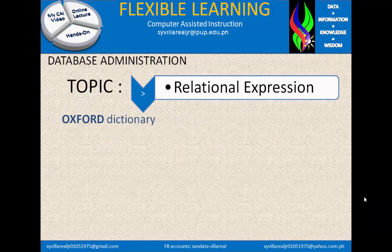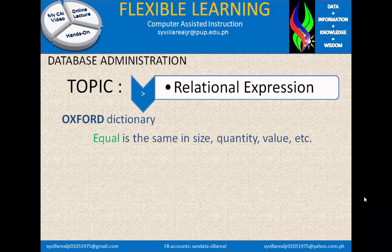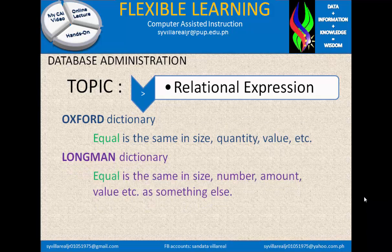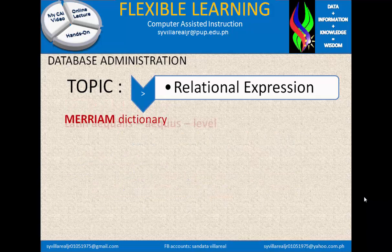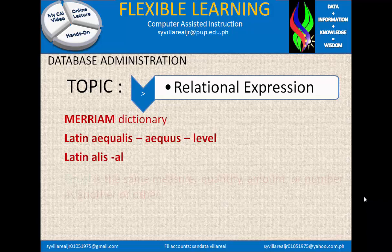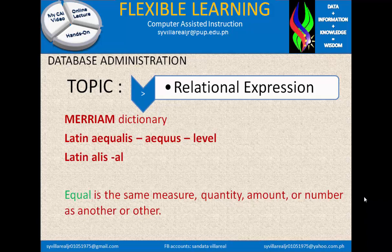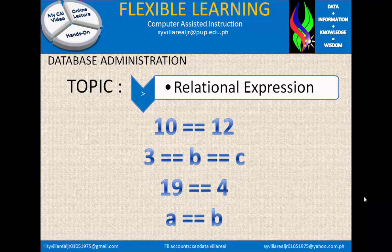What is equal? In the Oxford Dictionary, equal is the same in size, quantity, value, etc. In the Longman Dictionary, equal is the same in size, number, amount, value, etc. as something else. In the Merriam Dictionary, equal is the same in size, quantity, amount, or number as another. An example: 10 exactly equal to 12 — that is false. 3 exactly equal to B and exactly equal to C — answerable by true or false depending on the values. 19 exactly equal to 4 — this is false. And A exactly equal to B — this is also answerable by true or false.